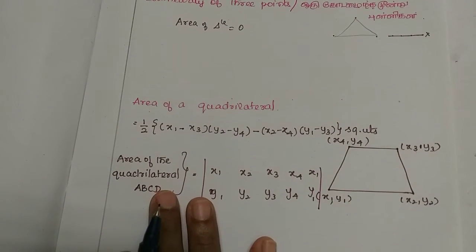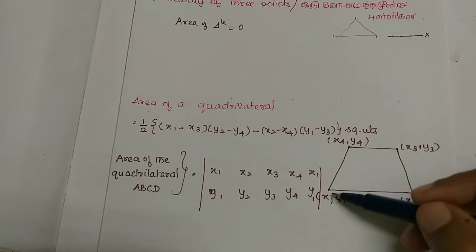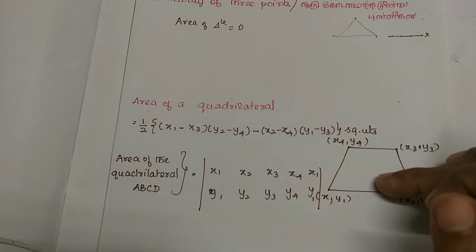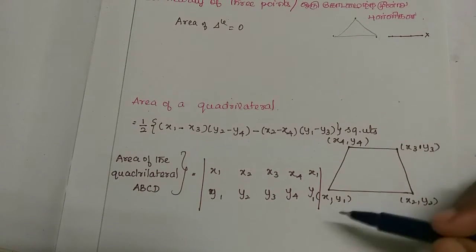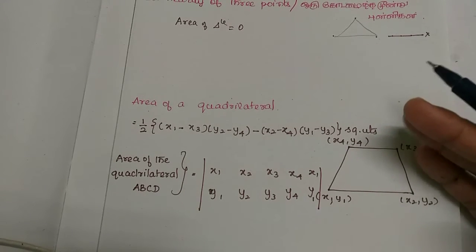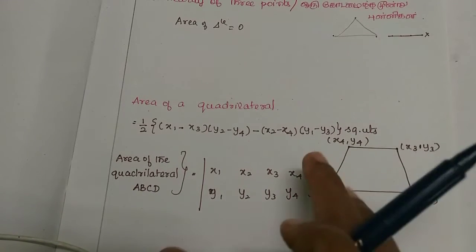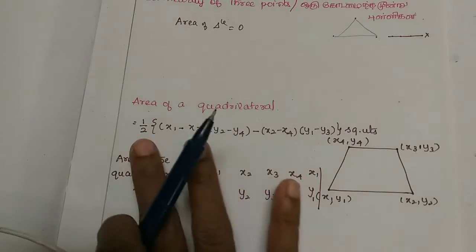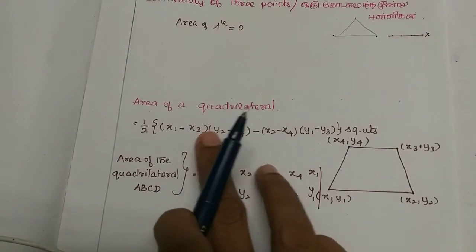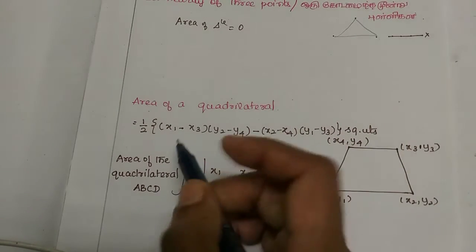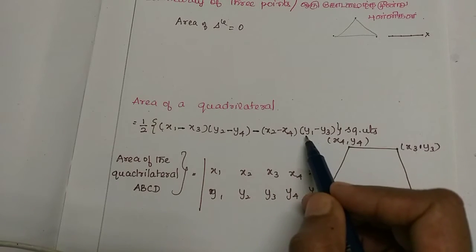Next, the area of a quadrilateral uses four points — four corners, four sides. The formula is: half into the modulus of x1(y2 minus y4) minus x2(y1 minus y3), where the odd-indexed x values multiply differences of even-indexed y values, and vice versa. We substitute x1, x2, x3, x4 and y1, y2, y3, y4 directly into the formula.